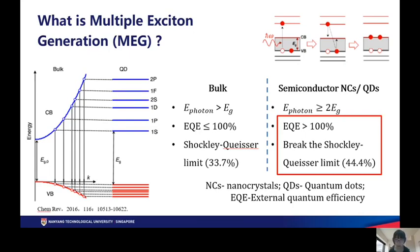In the bulk material, photons with energy lower than the band gap are not able to excite an electron to transit from the valence band to the conduction band. These photons are not absorbed by the materials at all.